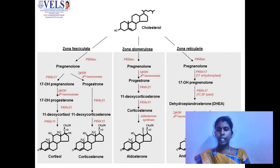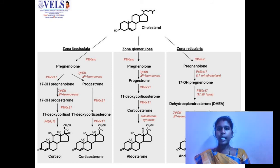This is the synthetic pathway of the different types of corticosteroids from cholesterol. From cholesterol, in the zona fasciculata, it releases cortisol and corticosterone. From the zona glomerulosa, aldosterone is synthesized. In the zona reticularis, androgen derivatives are released.